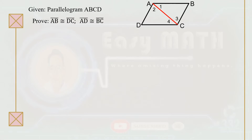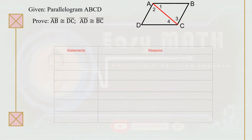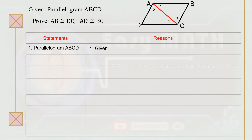Given parallelogram ABCD, we're going to prove that segment AB is congruent to segment DC, and segment AD is congruent to segment BC. Statement number one: Parallelogram ABCD. Reason: it's the given.